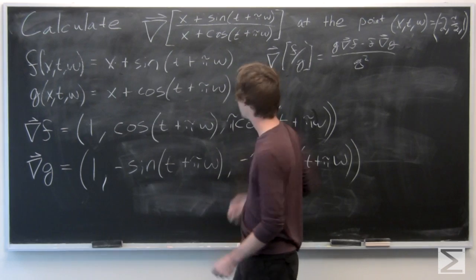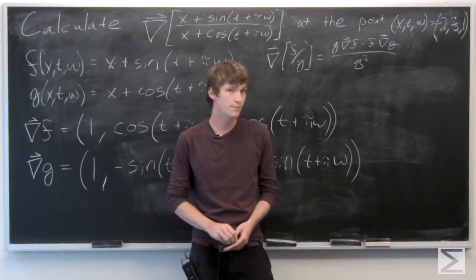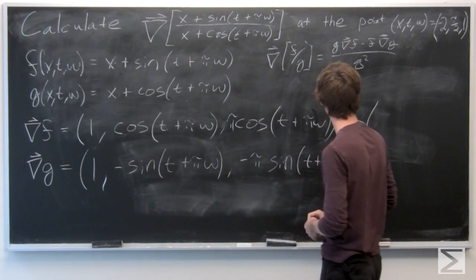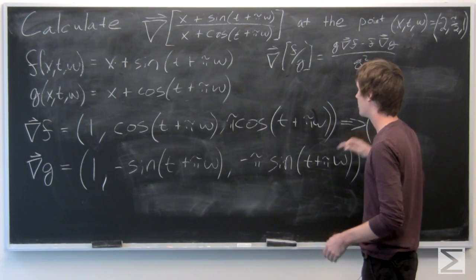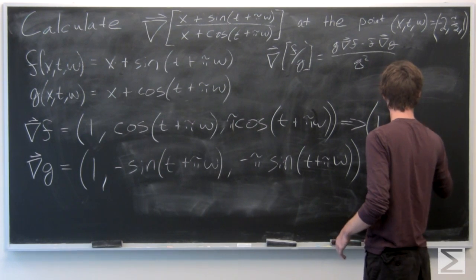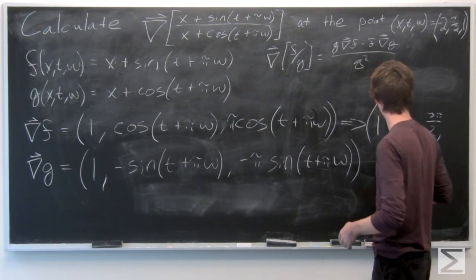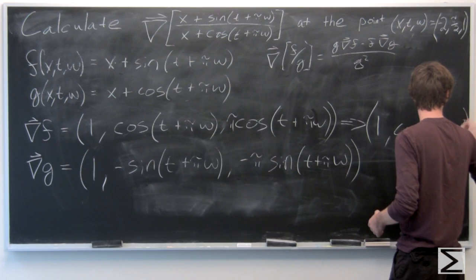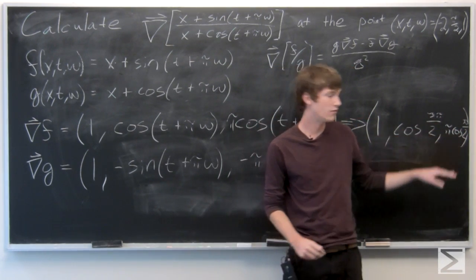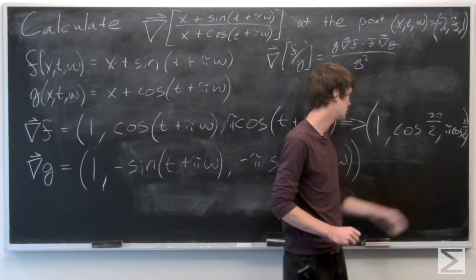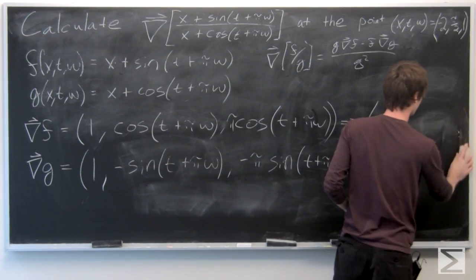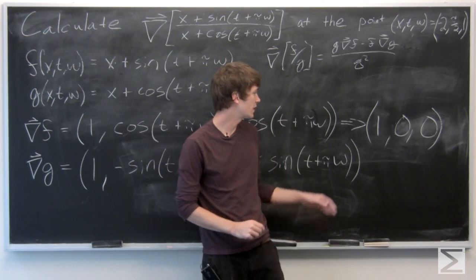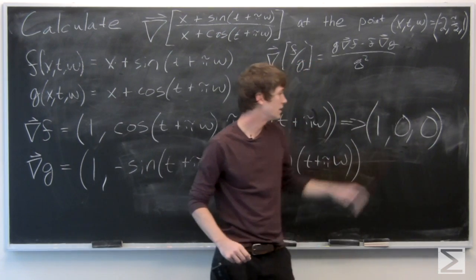Now we want to evaluate at the point (-2, π/2, 1). The gradient vector of f at (-2, π/2, 1): the argument t + πω becomes 3π/2, and cosine(3π/2) equals 0. So the gradient vector of f at the point is (1, 0, 0).